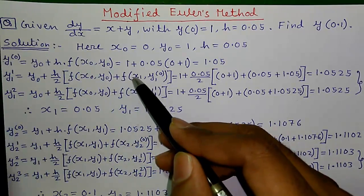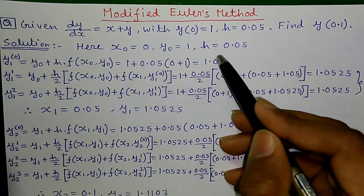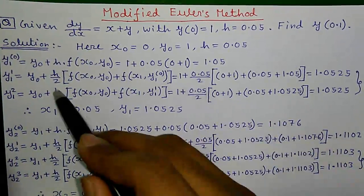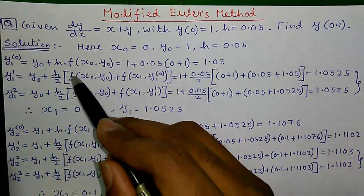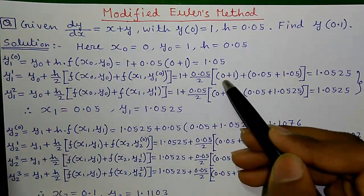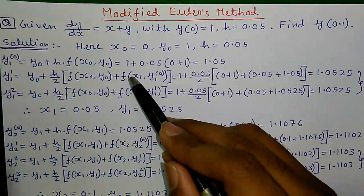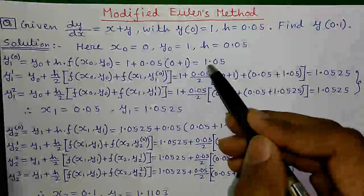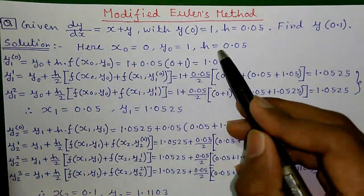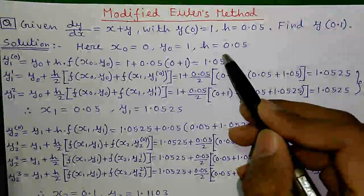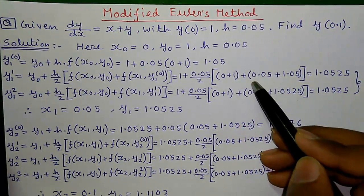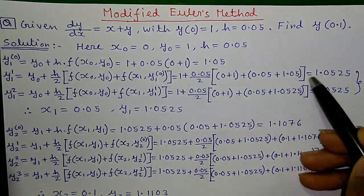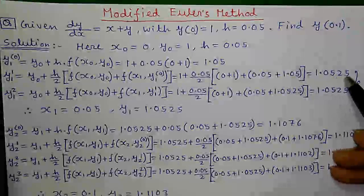Next, the corrector step: y1(1) equals y0 plus h/2 into [f(x0, y0) plus f(x1, y1(0))], where y1(0) is our previous value. So y0 is 1 plus 0.05/2 into [(0 plus 1) plus f(x1, y1(0))]. Here x1 equals x0 plus h, so x1 equals 0 plus 0.05, giving x1 equals 0.05.